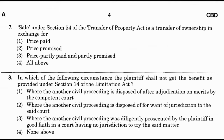Question number 8: In which of the following circumstances shall the plaintiff NOT get the benefit under Section 14 of the Limitation Act? Option 1: where another civil proceeding is disposed of after adjudication on merits by the competent court; option 2: where another civil proceeding is disposed of for want of jurisdiction; option 3: where another civil proceeding was diligently prosecuted in good faith in court having no jurisdiction; option 4: none of the above. The answer is option 1.